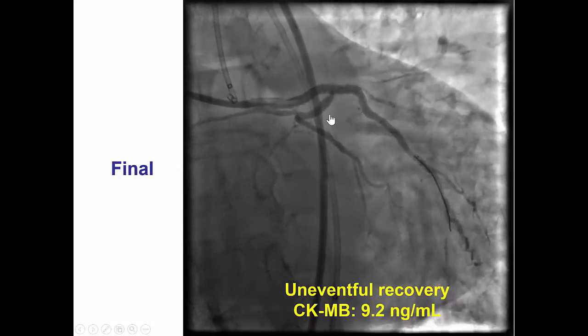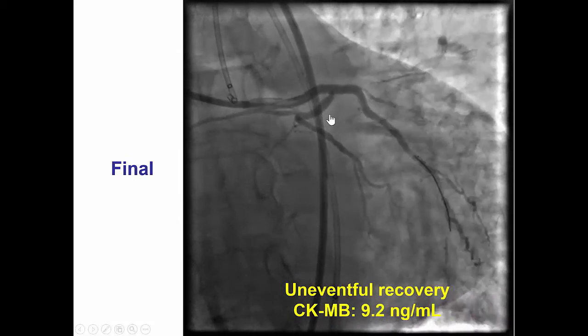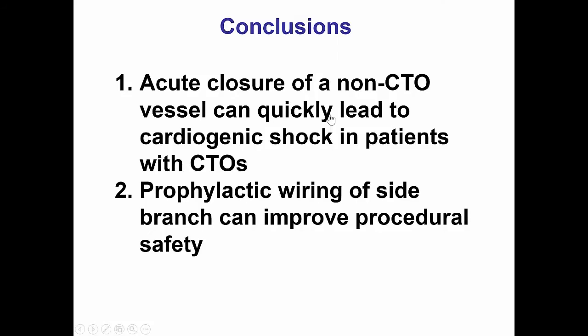We aborted the procedure after this event. The patient is going to return later on for another attempt versus consideration of coronary bypass graft surgery. In summary, closure of a donor vessel can be a lethal event in patients with CTOs because it creates a large area of ischemia. Therefore, a way to protect against this is to have a safety wire into that vessel, so that in case a complication occurs — as in this case where dissection happened — one can very promptly stent the donor vessel and prevent acute hemodynamic compromise. Thank you.